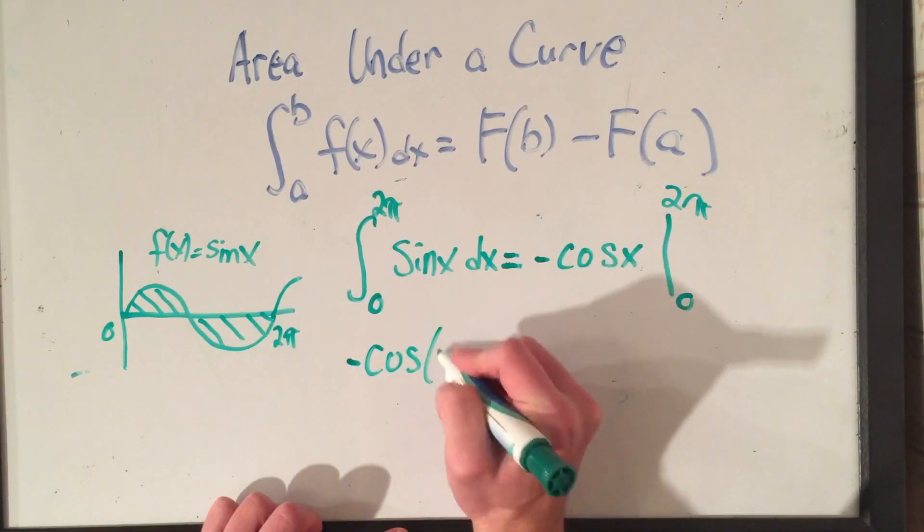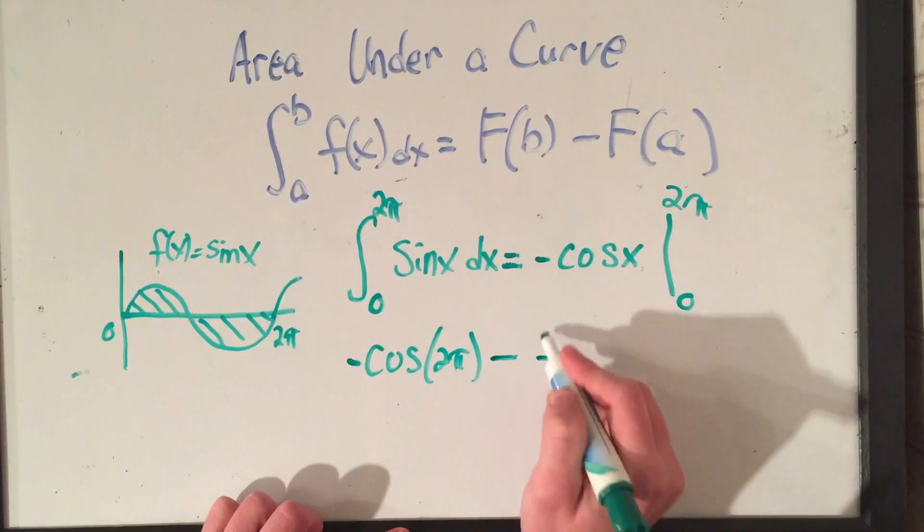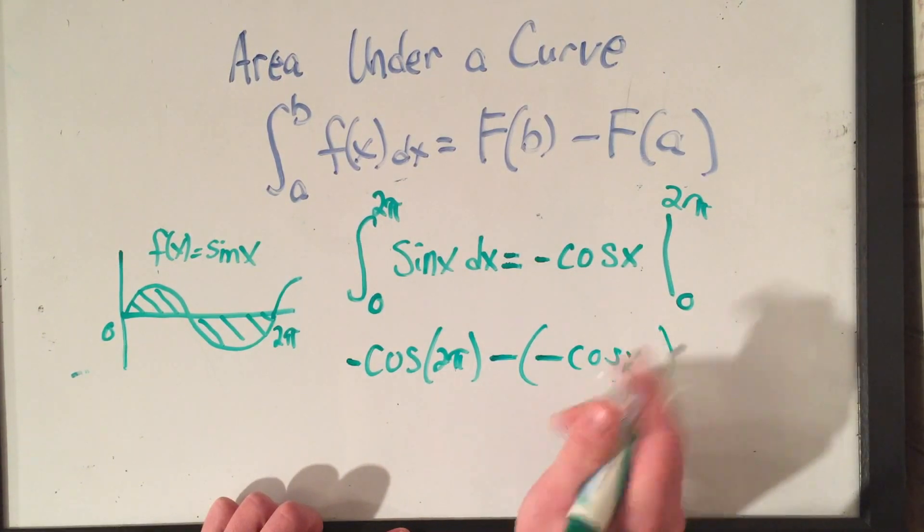So this will be minus cosine of 2 pi. I've got minus a minus cosine of 0, cosine of 0.